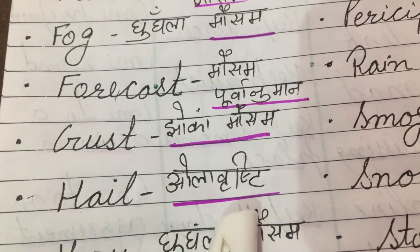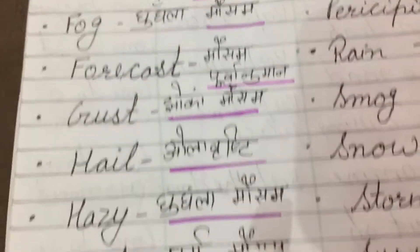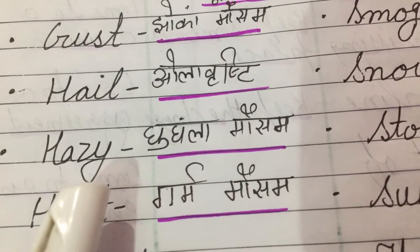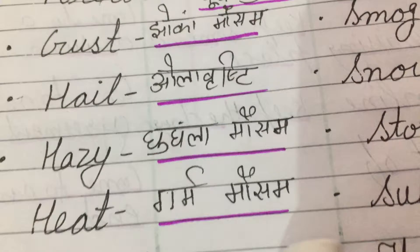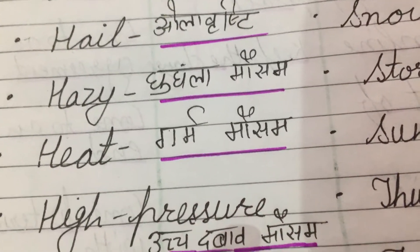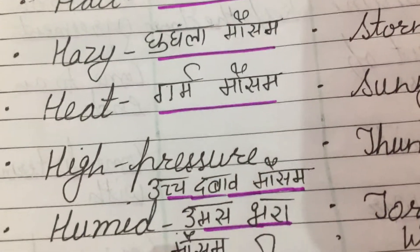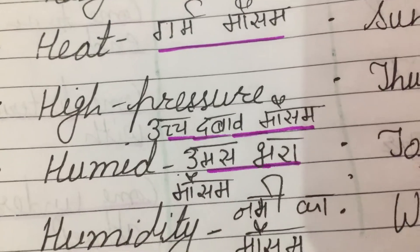Hail means Olavrishty, means Barapwala. Hazy means Dundla mousam. Heat means Garam. High Pressure means Uchdbaav mousam.